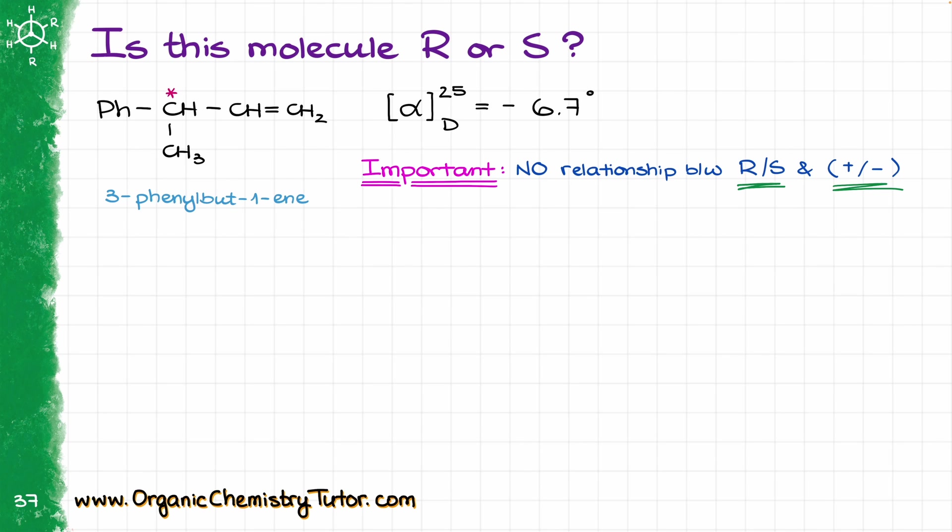So if there is no direct relationship, and I cannot easily determine whether my molecule R or S, I don't even know how to draw it on paper properly. So how are we going to deal with something like that in real life?